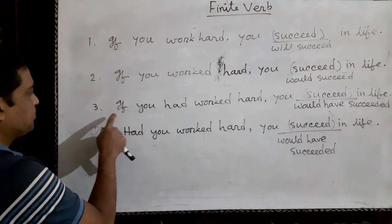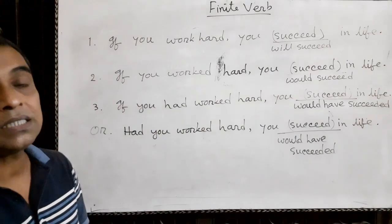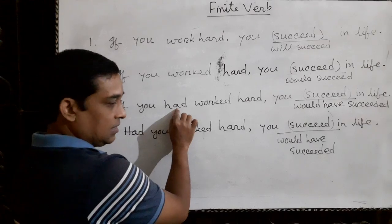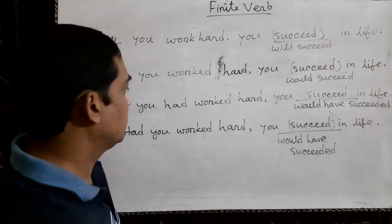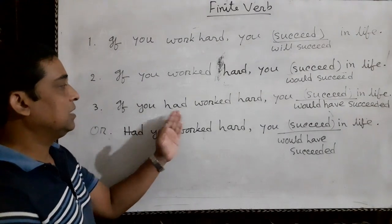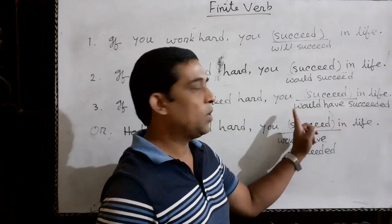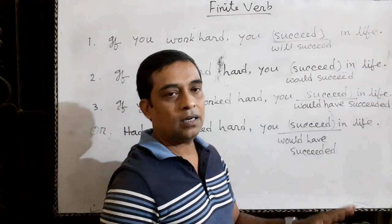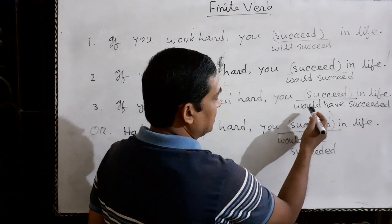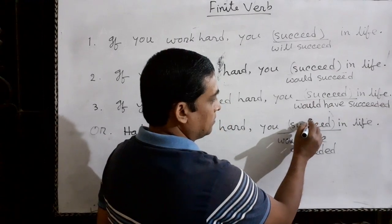Number one: 'If you had worked hard...' — this subordinate clause is in past perfect tense. 'Had worked' — 'had' here is an auxiliary verb and 'worked' is the main verb. If the subordinate clause is in past perfect tense, then we must write 'would have,' 'could have,' or 'might have' after the subject, on the basis of the meaning of the sentence.